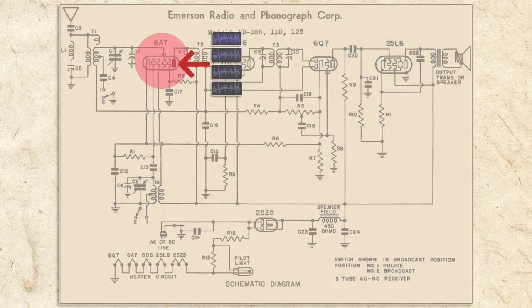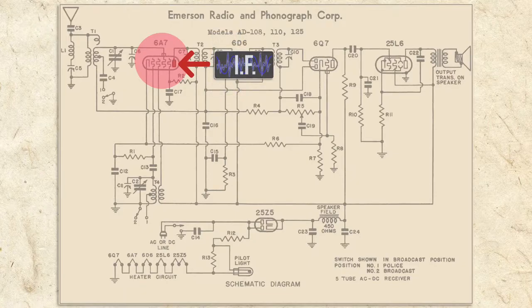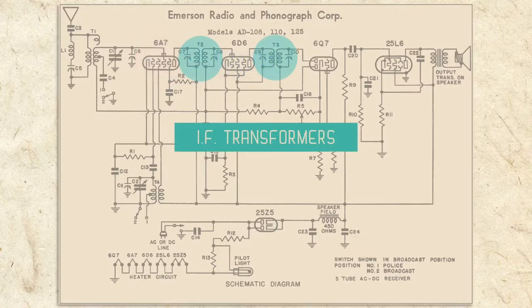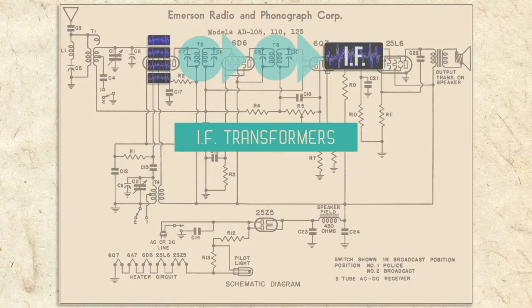You've also learned that by adding the antenna and oscillator signals, we now have four signals at the plate of the converter, and that we only want to amplify the lower intermediate frequency. The IF transformers filter away the unnecessary frequencies and help strengthen the IF signal.